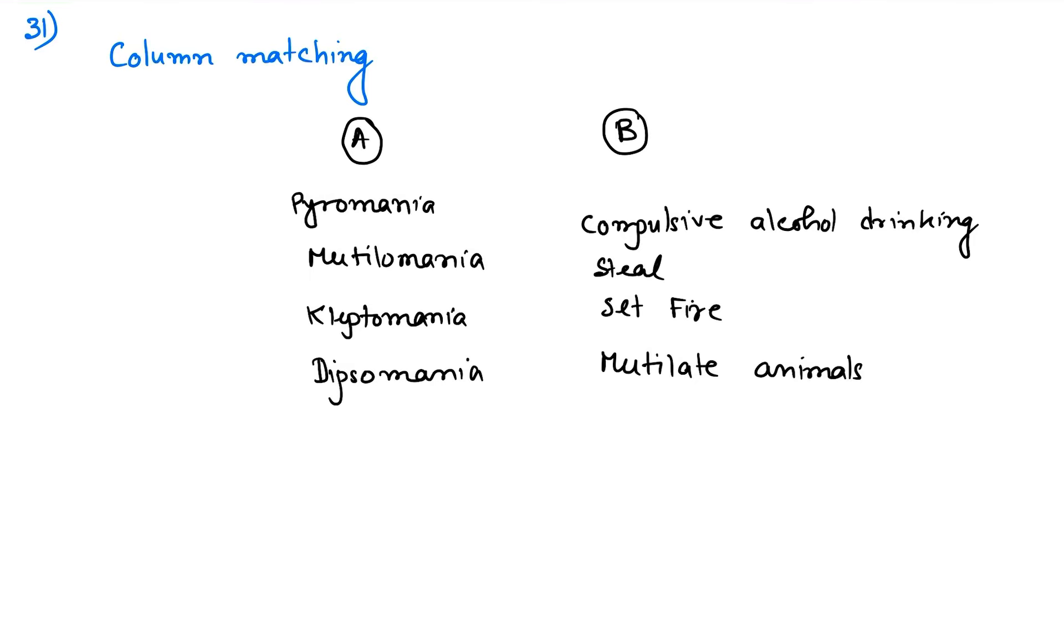Hello everyone, welcome to the fourth video of Ionicity Recall question discussion, starting with question number 31. It's about column matching. In column A there were some obsessions, and in column B descriptions of the obsessions.